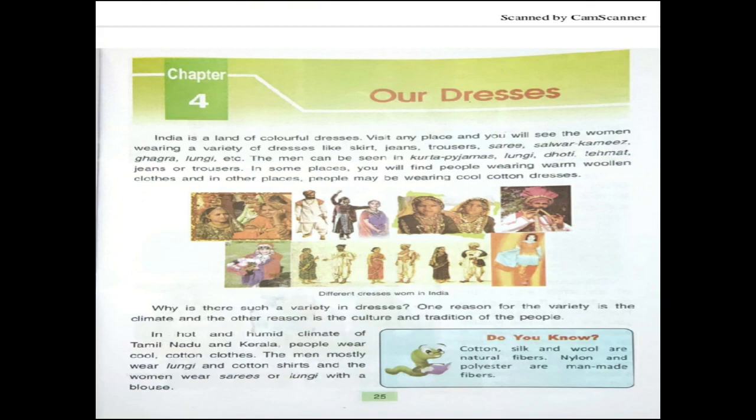Why is there such a variety in dresses? One reason for the variety is the climate, and the other reason is the culture and tradition of the people. In the hot and humid climate of Tamil Nadu and Kerala, people wear cool cotton clothes, because cotton clothes are cool and comfortable in summer and hot, humid seasons. The men mostly wear lungi and cotton shirt, and the women wear saree or lungi with blouse. This is the dress of Tamil Nadu and Kerala.